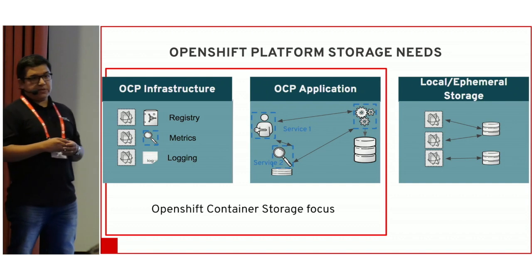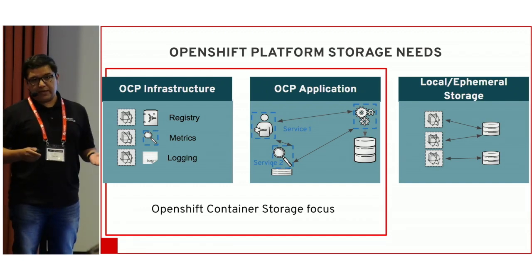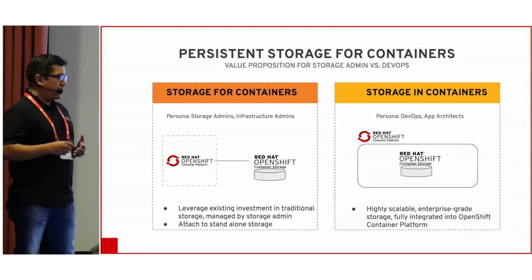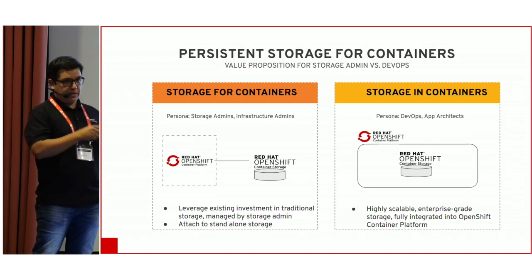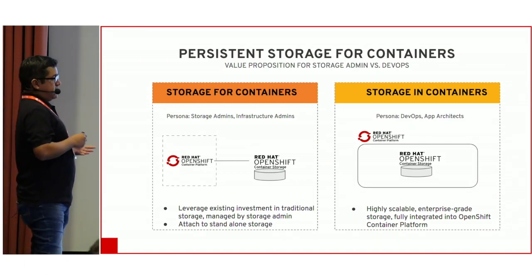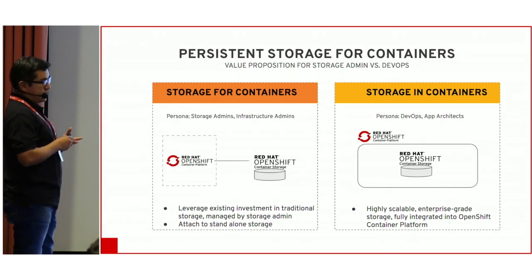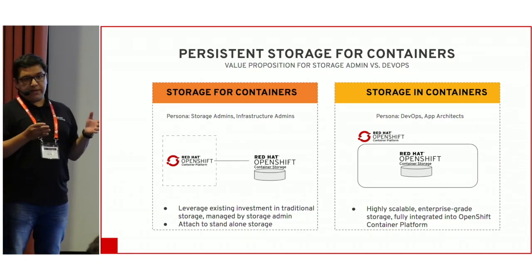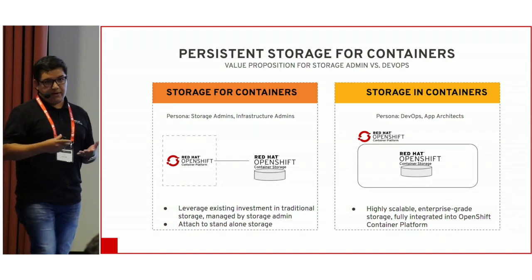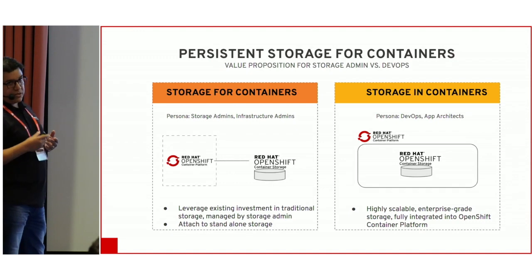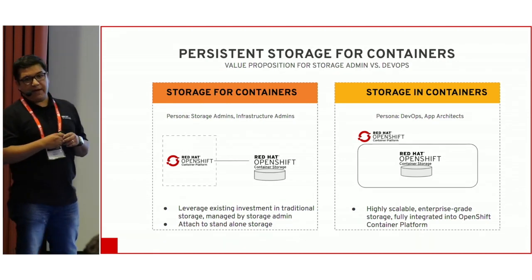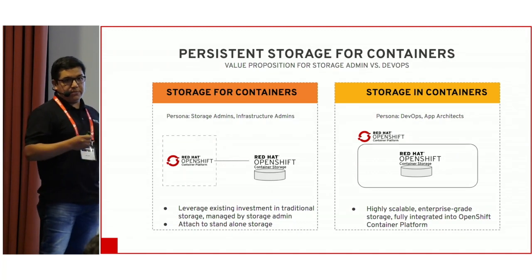Then you have storage for stateful applications. In the previous presentation there was a session about Kafka — there are multiple applications like 3scale that require stateful, persistent storage. So what is the Red Hat proposition? How can you deploy Red Hat storage inside or outside OpenShift? On the left side, we see a deployment model based on storage for containers, meaning you run your platform independently from your storage — on dedicated VMs running our storage product binaries — then connect through APIs. OpenShift and OCS are independent. On the right is the flavor called storage in containers, where your storage becomes an application.